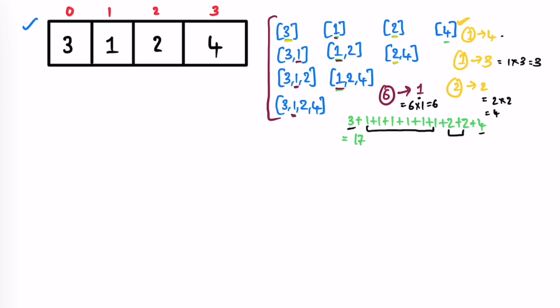Now let's use these two arrays to count subarrays. We build a table with columns: element, left distance, right distance, product, and total sum. The left distance formula is: current index i minus the left next smaller index. For element three at index 0: 0 - (-1) = 1. For element one at index 1: 1 - (-1) = 2. For element two at index 2: 2 - 1 = 1. For element four at index 3: 3 - 2 = 1.